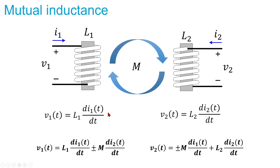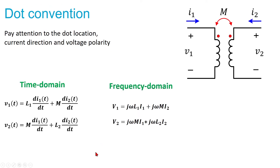The plus or minus depends on how the windings are wound and how they impact each other. To identify the sign, we use dot convention. We assume positive polarity of voltage is where the current enters the coil. Under this condition, if both currents enter the dots, or both currents exit the dots, then the sign is positive. In this scenario, both currents enter the dots, therefore the sign is positive.